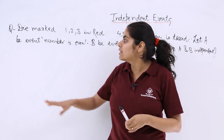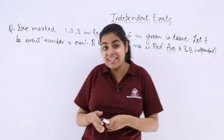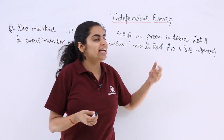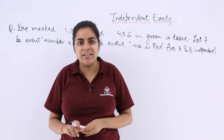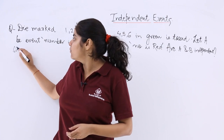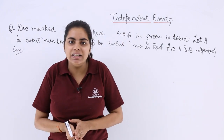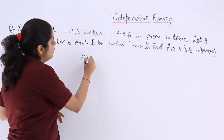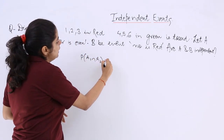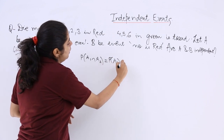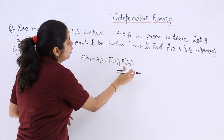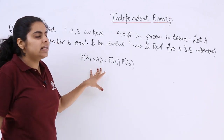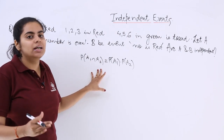There are two events: A, where the number is even, and B, where the number is red. We have to find out whether A and B are independent. For independence, the condition is that P(A∩B) must equal P(A) multiplied by P(B). Here we have events A and B instead of A1 and A2.